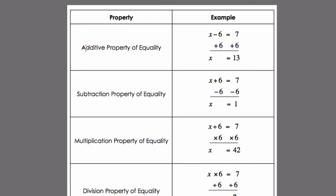These properties - the additive, subtraction, multiplication, and division properties of equality - are the names that we use to describe the operations we're using when we're balancing equations.